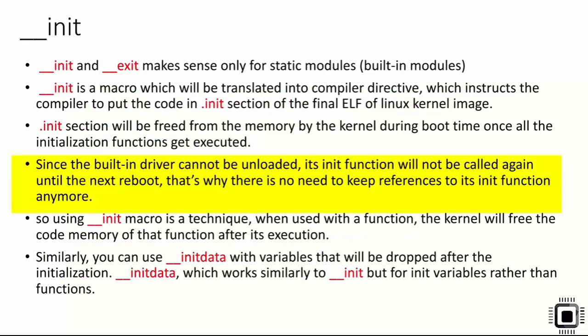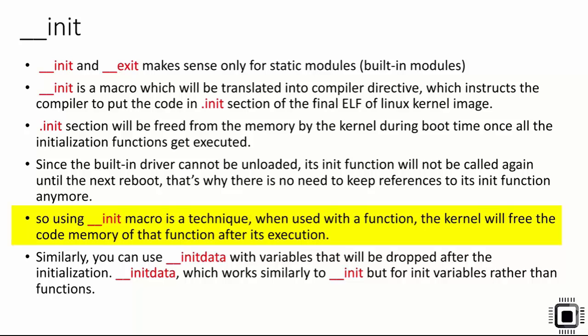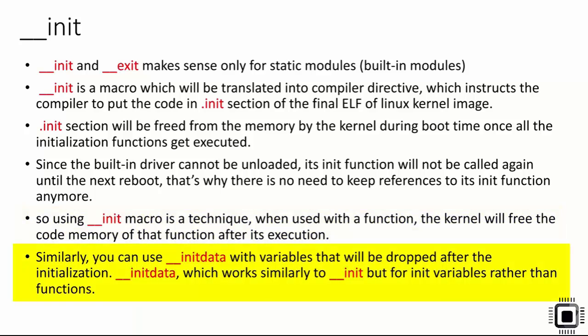Using the __init macro is a technique where, when used with a function, the kernel will free the code memory of that function after its execution. It is also optional — if you omit it, there are no compilation warnings or errors. Similarly, you can use __initdata with variables that will be dropped after initialization. __init is for functions; __initdata is for initialization variables.